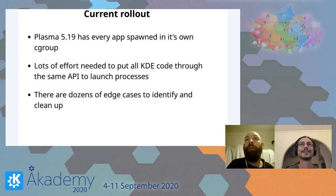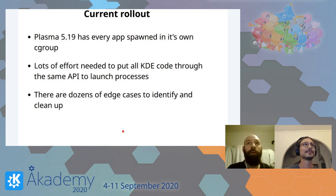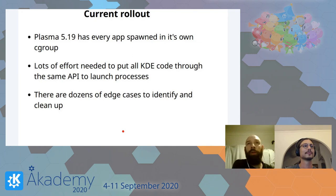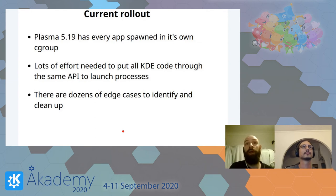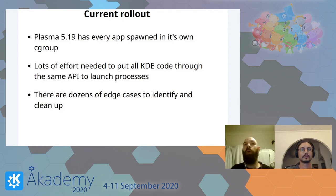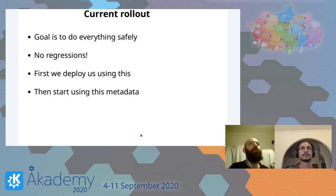So what have we done so far? Plasma 5.19 has every application spawning inside its own cgroup. Most of this is a tiny piece of code in KIO — in the application launch job and command line launch job. But we needed a lot of effort to go through all the KDE code and make sure we were using a unified way of launching applications, which had become quite fragmented over the last 20 years. We found dozens of edge cases. The goal is to do everything safely with no regressions.